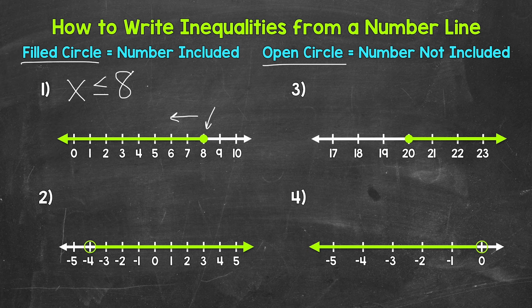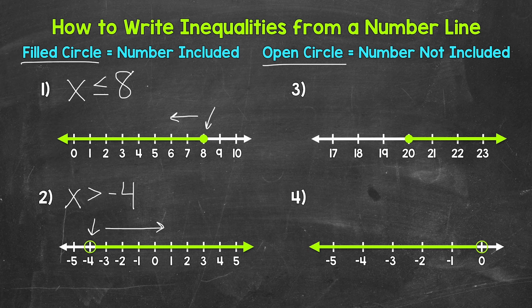Let's move on to number 2, where we have an open circle at negative 4, and then an arrow pointing to the right — the direction of all of the numbers greater than negative 4. So we have x is greater than negative 4. Now is negative 4 included in these solutions? No. So we do not have a greater than or equal to — it's just greater than. Again, because we have that open circle, that tells us that that number is not included.